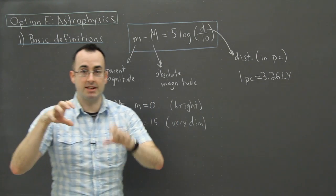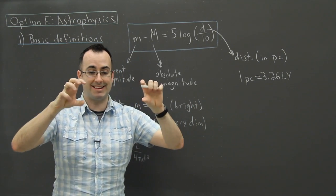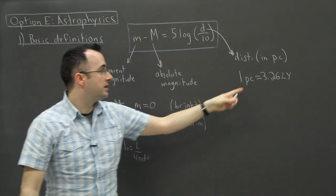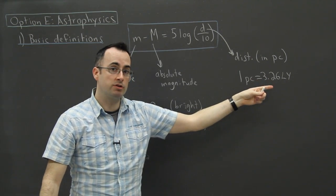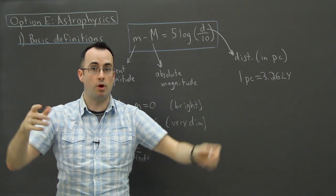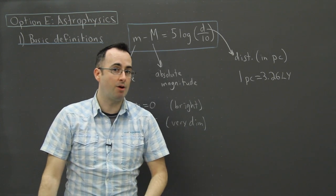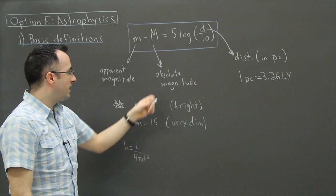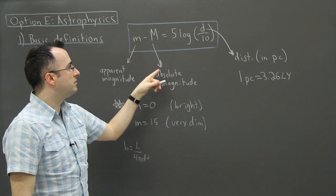In other words, if you could take every single star and throw them all at exactly 10 parsecs away, which would be 32.6 light years away, if you could put every single star over there, then we'd be able to compare them all evenly. That's kind of how it works. It's a little bit silly though. So there we go. We have a little bit about the magnitudes.